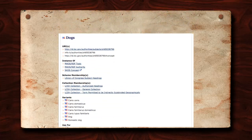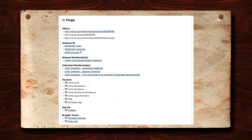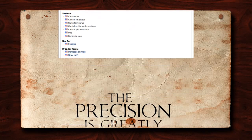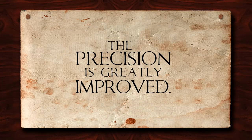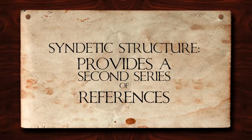For example, in the Library of Congress subject headings, the entry for this type of animal is dogs. Looking at the full entry, we see other terms for this type of animal. However, each of these terms refers back to the access point, which is dogs. By making all information on dogs available by searching that term, the precision of the search is greatly improved. The other helpful feature of controlled vocabularies is their syndetic structure, which provides a second series of references between hierarchically arranged concepts.